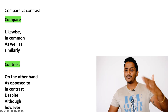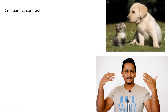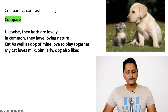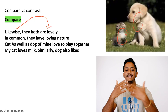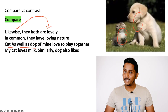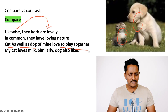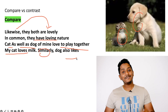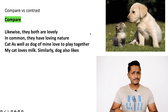Here's a simple scenario using a diagram of a cat and a dog. If you want to compare them: 'Likewise, they both are lovely' — cat is lovely, dog is lovely, that's a common thing. 'In common, they have a loving nature.' 'Cat as well as dog love to play together' — both inherit the same characteristics. 'My cat loves milk; similarly, my dog also likes milk' — that's a similar character you discovered by comparing them.